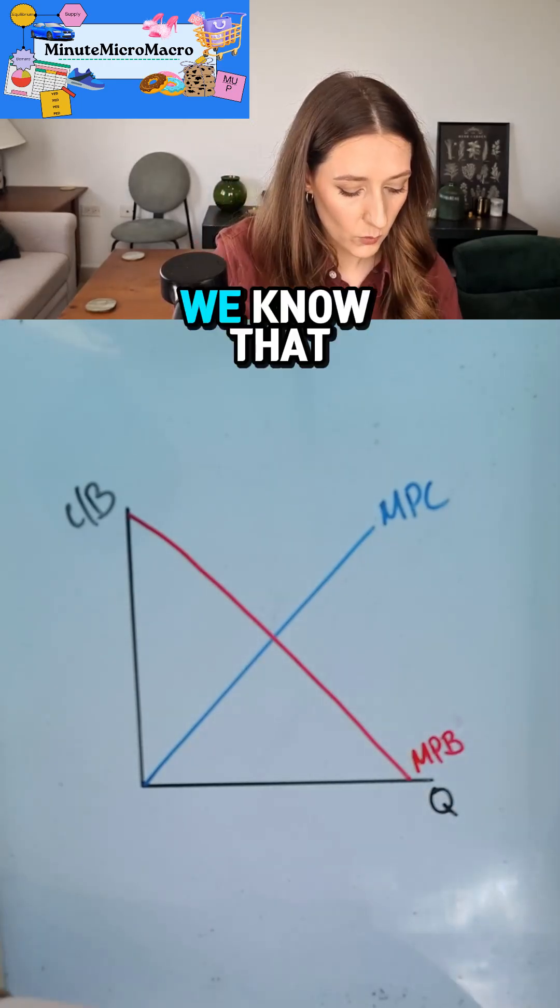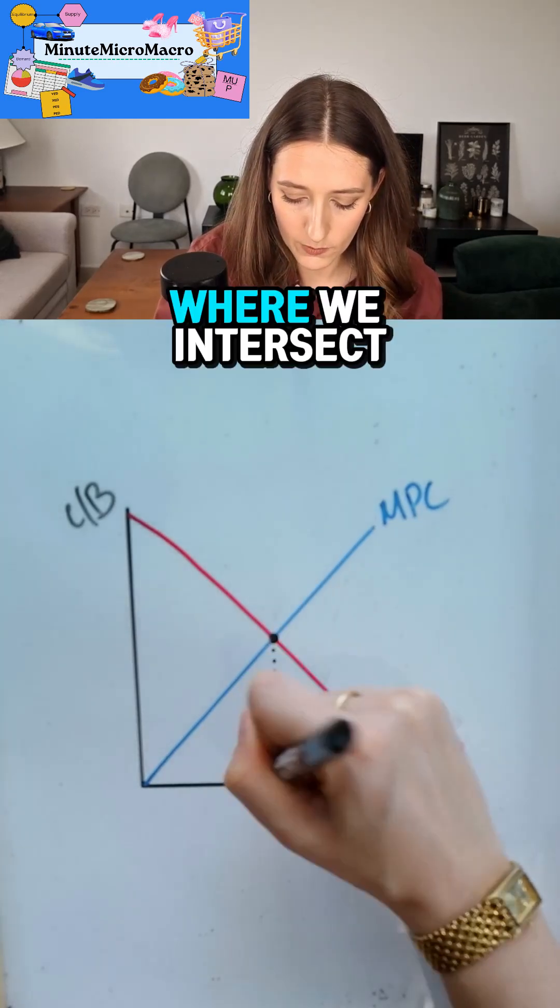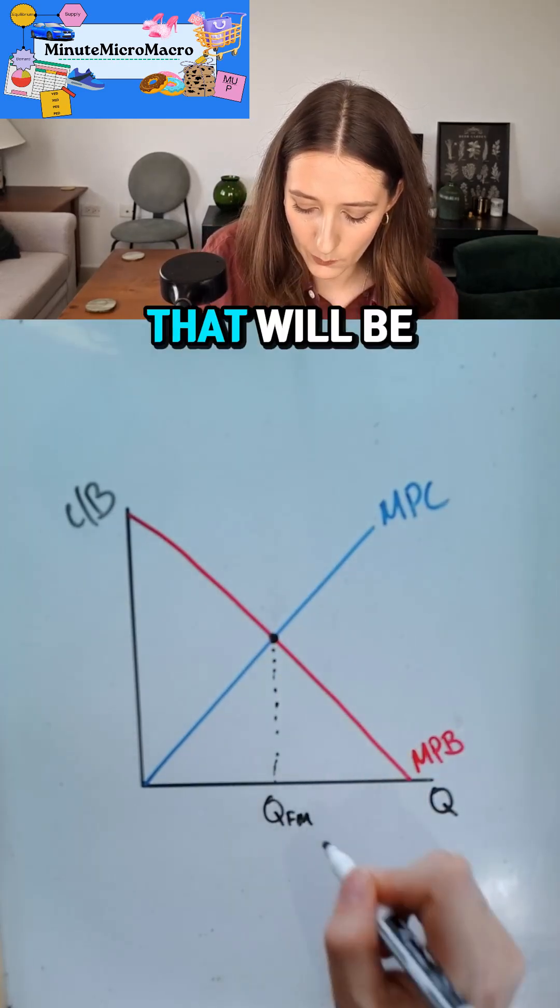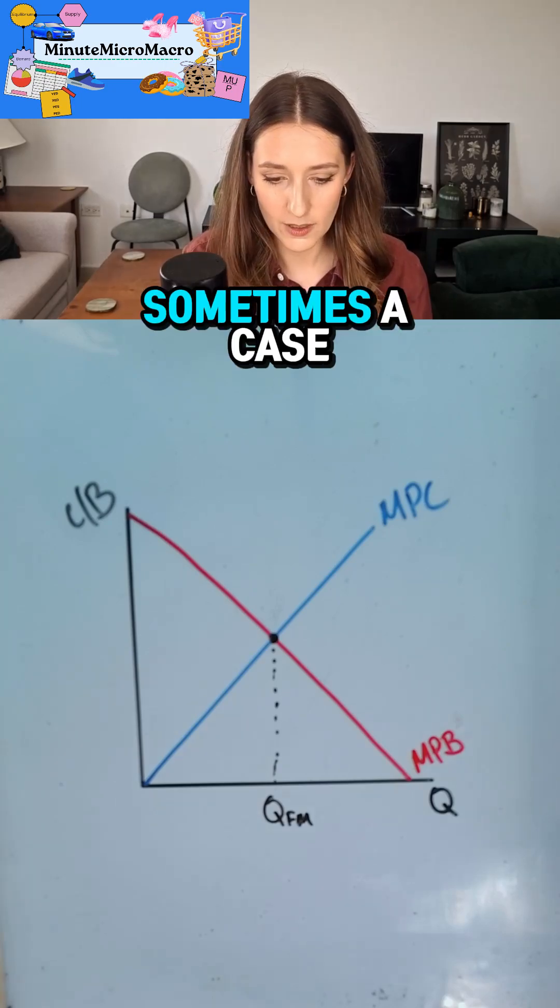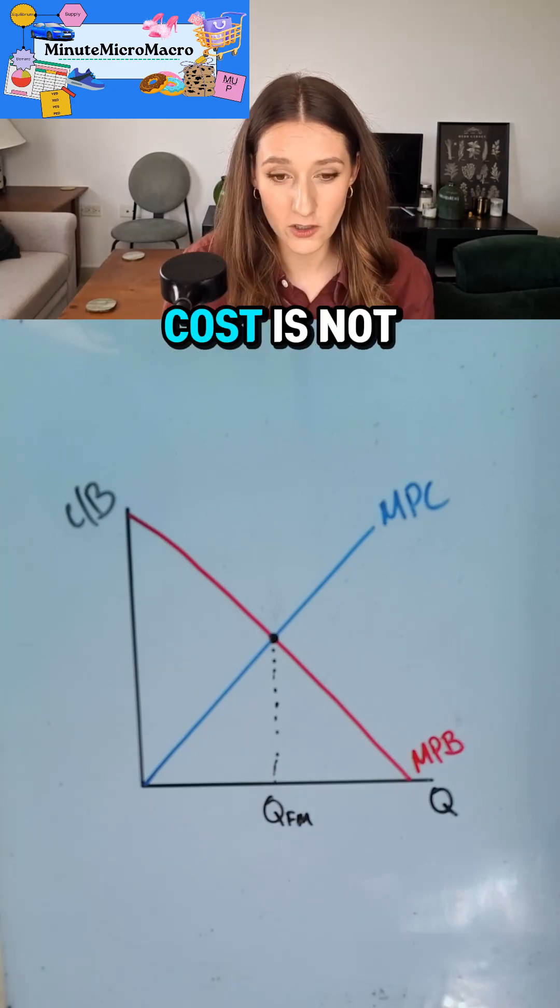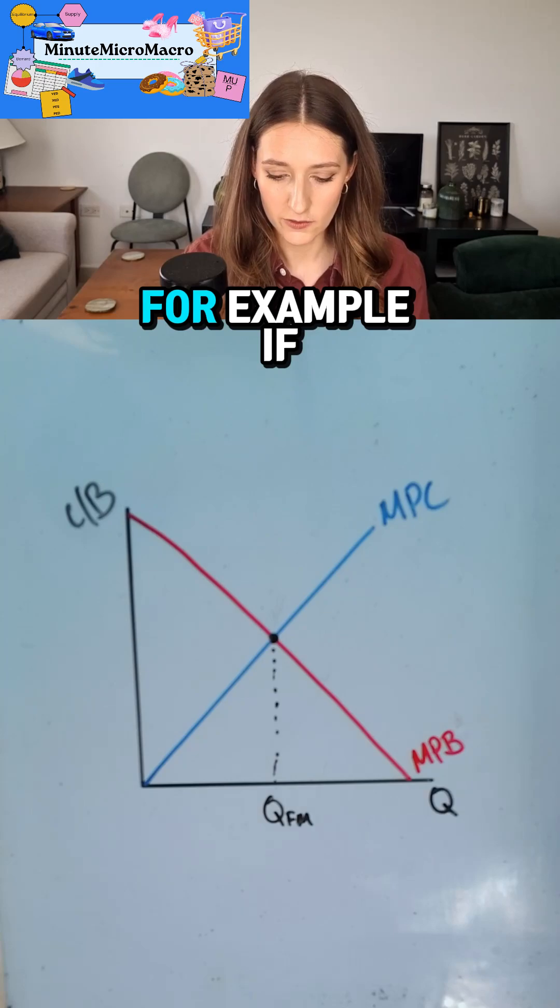We know that in the free market, this point where we intersect is the quantity that will be produced. However, there is sometimes a case where the private cost is not equal to the social cost.